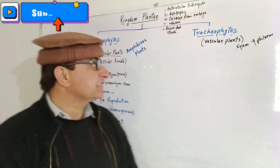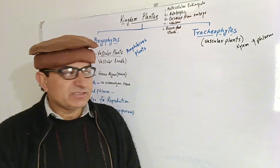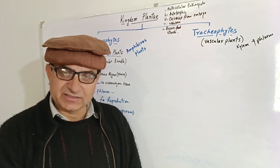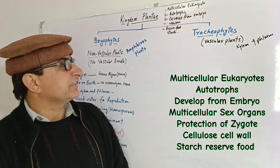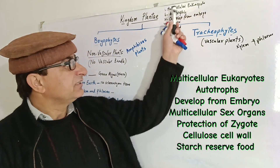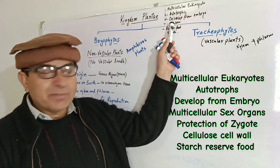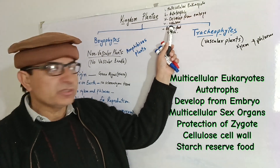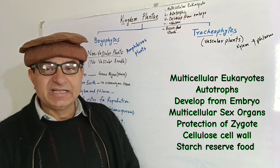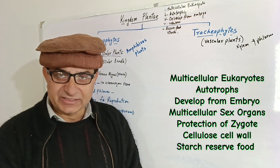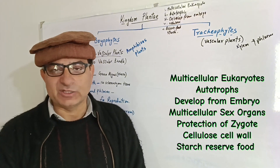Today we are starting a new chapter which is Kingdom Plantae. Kingdom Plantae has some fundamental characteristics that have given the kingdom status. All members of Kingdom Plantae are multicellular eukaryotes; they are autotrophic in nature, they develop from embryo, they have cellulose cell wall, and they have reserved food of starch. They have multicellular sex organs — antheridia and archegonia — and they have protected zygote.